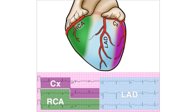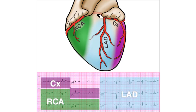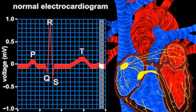The right coronary artery feeds the entire right side of the heart. The left anterior descending delivers blood mostly to the anterior left ventricle. The left circumflex supplies the lateral and posterior part of the left ventricle.